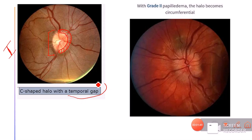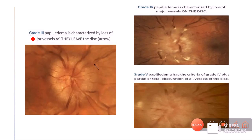In grade 2 papilledema, the halo becomes circumferential — the entire 360-degree border is affected and the temporal gap is filled. Grade 3 papilledema is characterized by loss of major vessels as they leave the disc — vessels are clearly seen on the disc but become blurred as they exit. All disc margins are already blurred, and vessels obscure as they leave the disc.